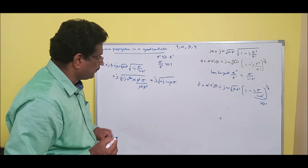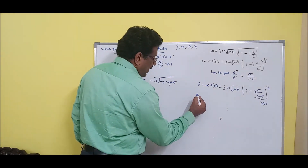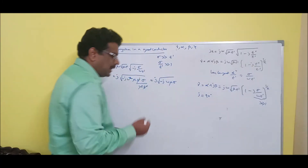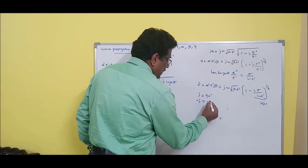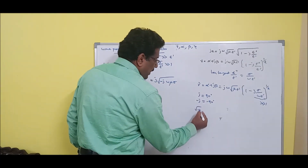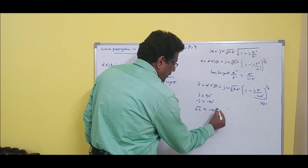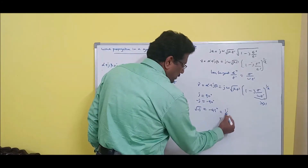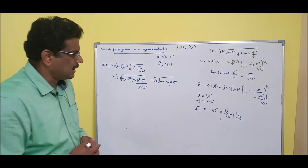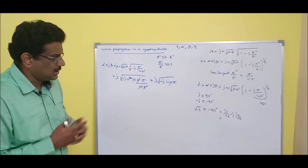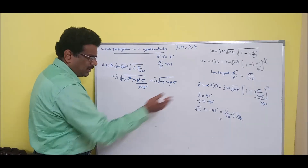Now, j represents a 90-degree phase shift, and minus-j represents minus 90 degrees. So root of minus-j is minus 90 divided by 2, which is minus 45 degrees. This can be represented as e^(j*(-45°)) equals cos(45°) minus j*sin(45°) equals 1/root(2) minus j/root(2). That is the knowledge you need — root(minus j) equals 1/root(2) minus j/root(2).